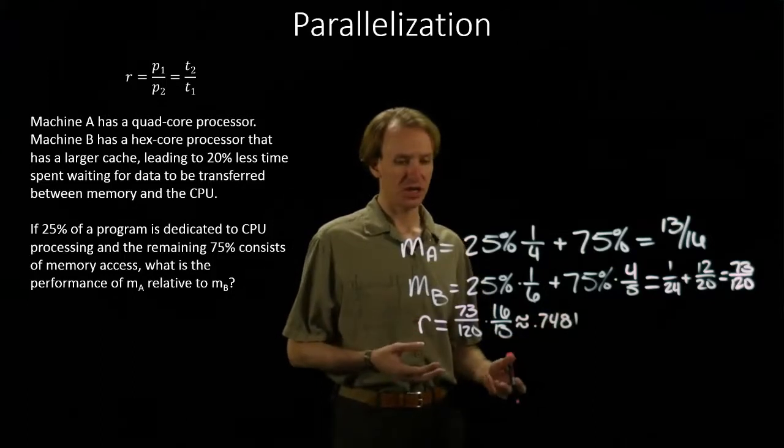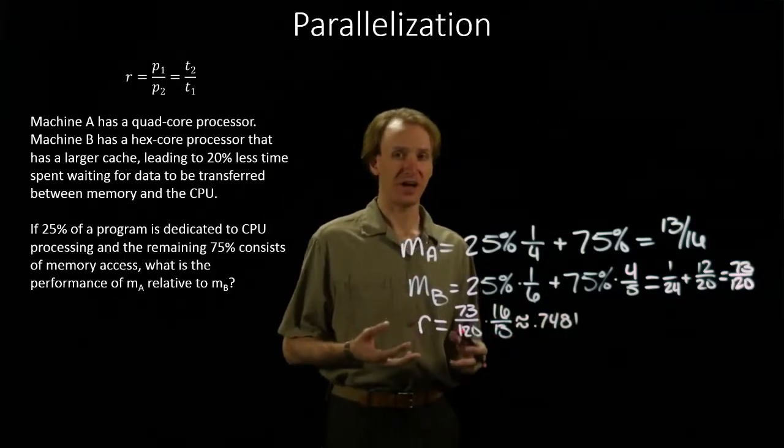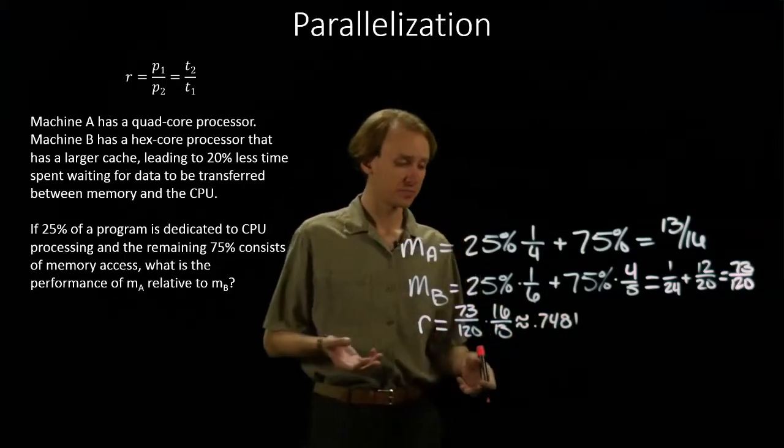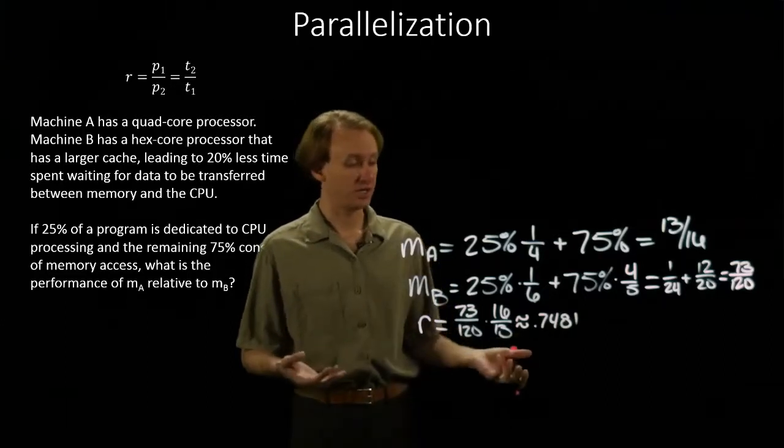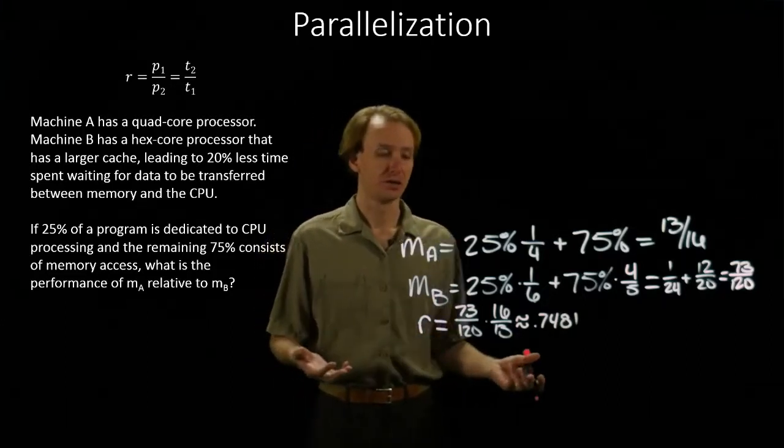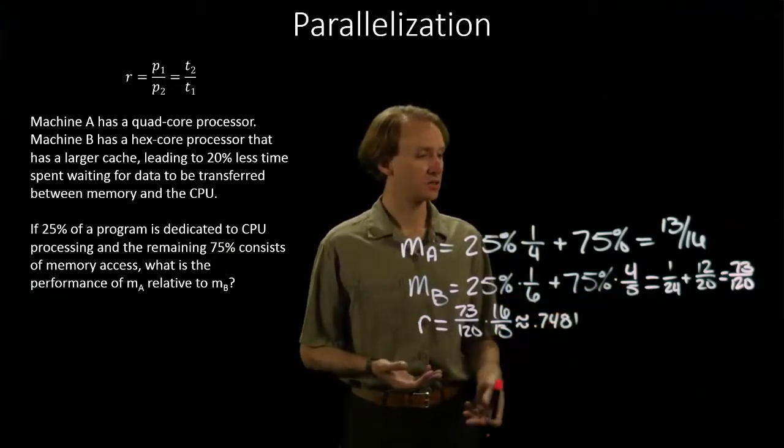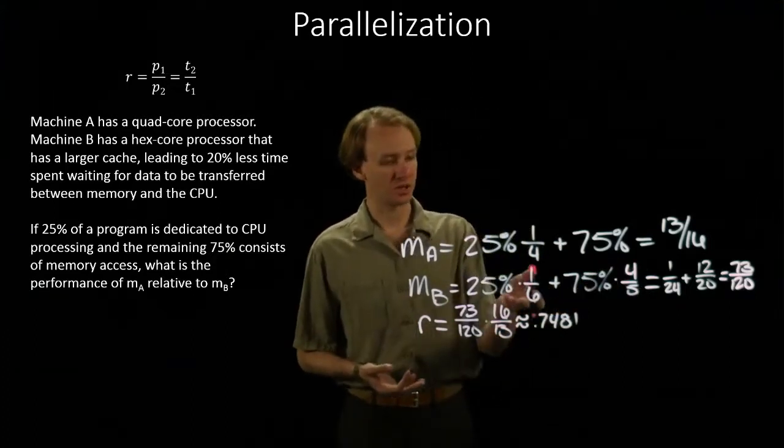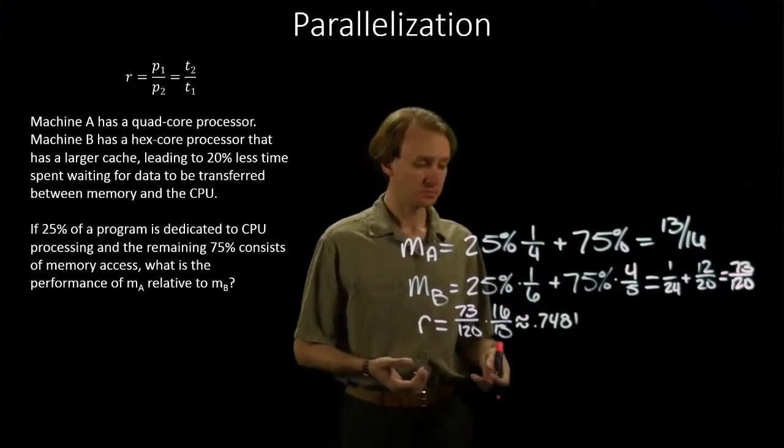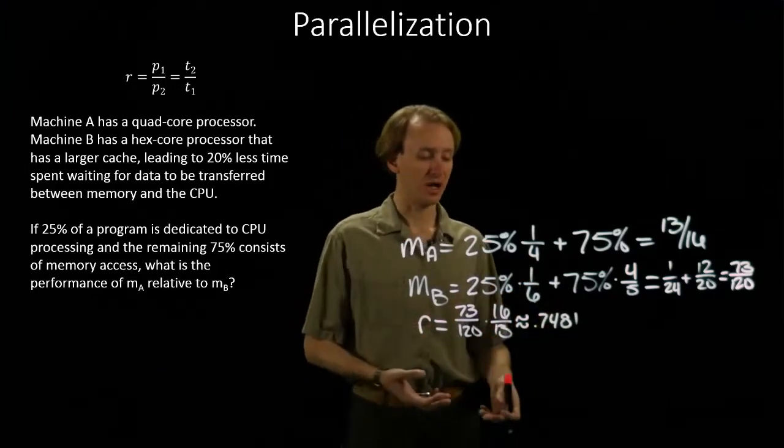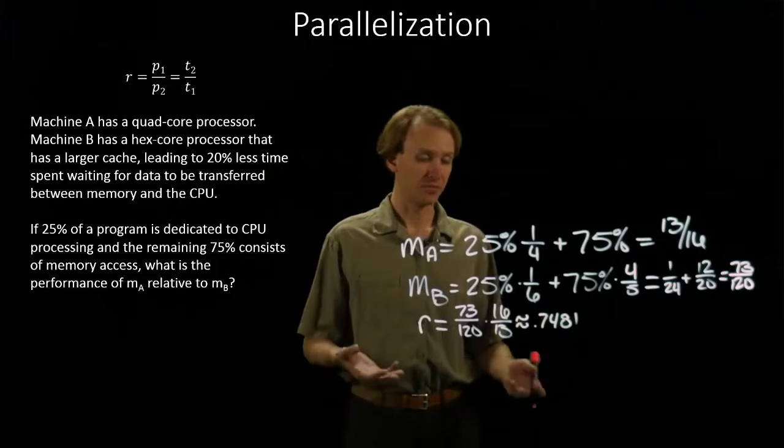So machine A is about three-fourths as fast as machine B. Or machine B is four-thirds times faster than machine A. So as we'd expect, machine B is a little bit faster, slightly faster on memory, slightly faster on the CPU. And that adds up to about a thirty-three percent speedup over machine A.